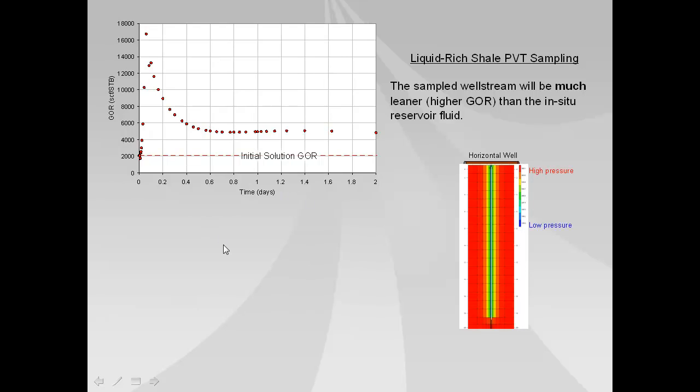Now these results are generated with a numerical model, finely gridded. This is a horizontal well, this is a single fracture extending out to this distance here, and the color is basically showing high pressure and low pressure.